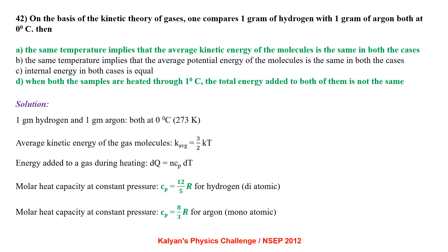Comparing 1 gram of hydrogen with 1 gram of argon, both at 0°C. Average kinetic energy of a gas molecule is (3/2)kT — same temperature means same average KE per molecule. Energy added during heating: DQ = nCₚDT. Molar heat capacity at constant pressure is (7/2)R for hydrogen and (5/2)R for argon. So options A and D are correct.